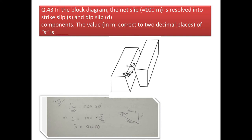Next question: in the block diagram, the net slip equals 100 m resolved into strike-slip and dip-slip components. Find the value of S in meters. There is a right angle triangle where the hypotenuse is 100 m (the net slip). Dip slip is parallel to the dip direction of the fault plane, and strike slip is parallel to the strike. Using trigonometry: cos 30° = S/100, giving S = 86.60 m.